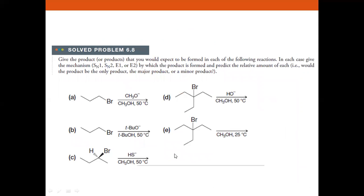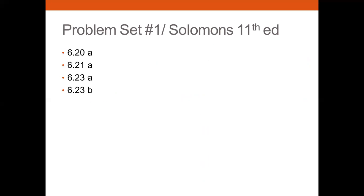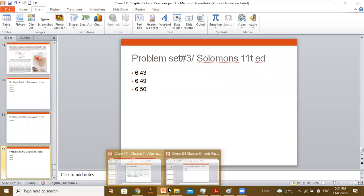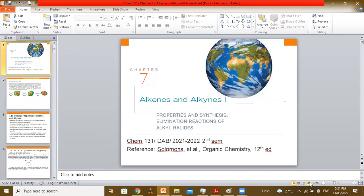For the remaining problems C, D, and E, the answers are provided for self-study. There are three problem sets from Solomon's Organic Chemistry 11th edition: Problem Set 1 — pages 610, 21, 23A–B; Problem Set 2 — page 679; Problem Set 3 — pages 633, 649, 65. That ends our discussion for Chapter 6.